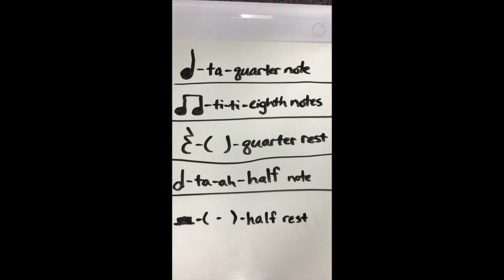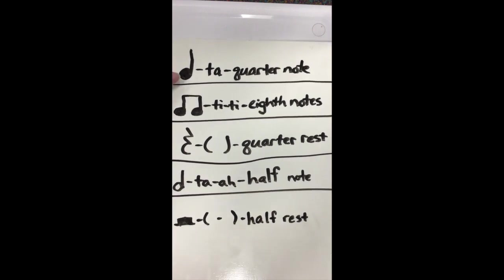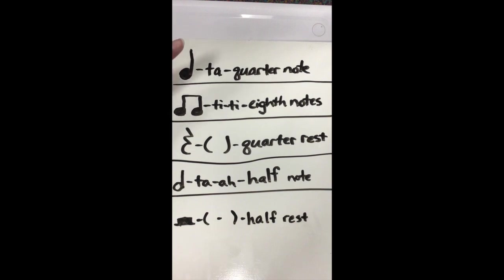Okay second graders, three of these should be review and two of these should be new or maybe a little familiar. Up here at the top we've got our quarter note — that's its musical name — but when we're counting them we say the syllable 'ta.' So for a steady beat we would say ta, ta, ta, ta, and it gets one beat.